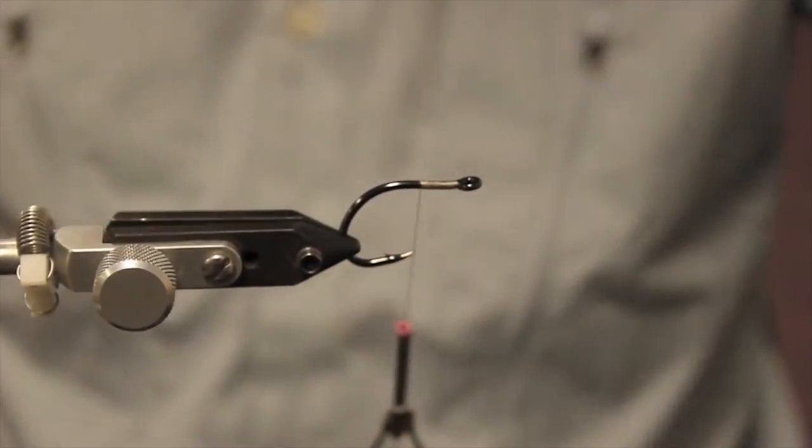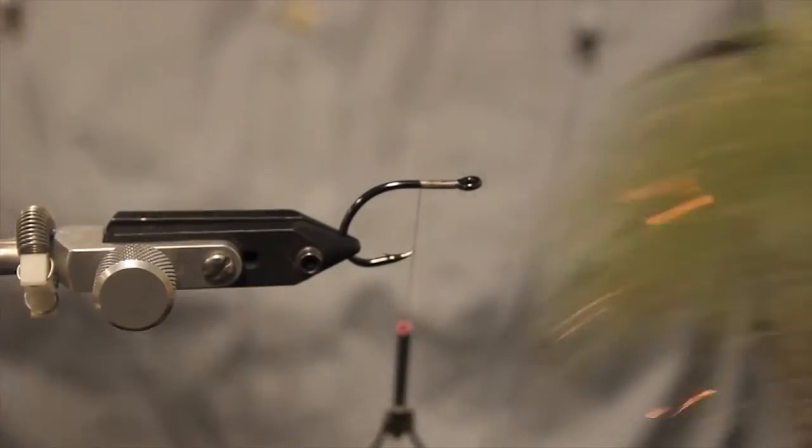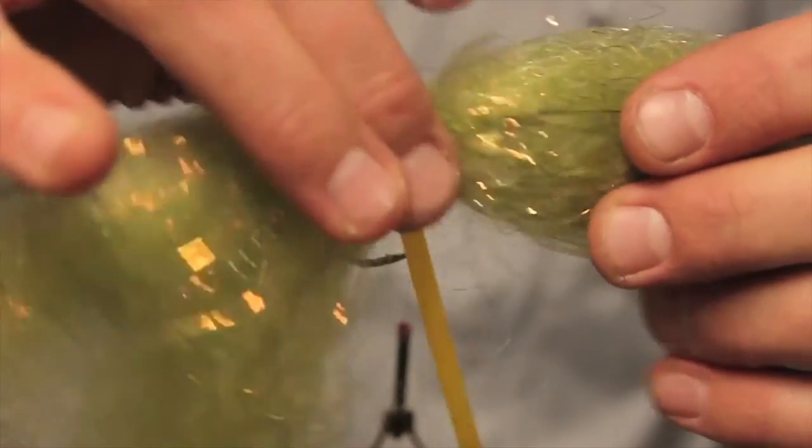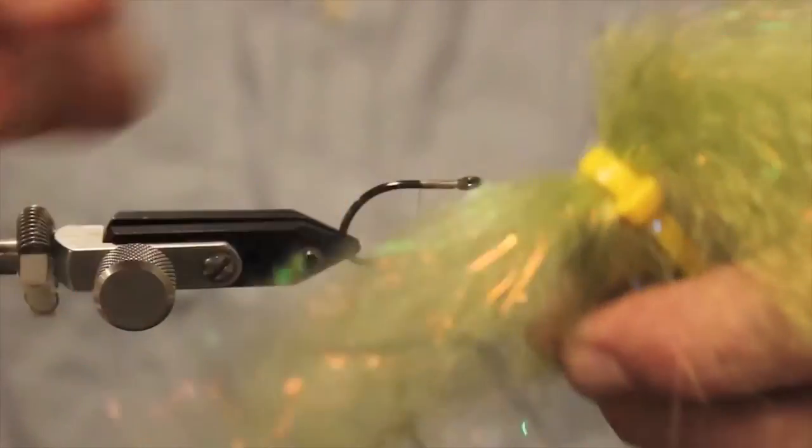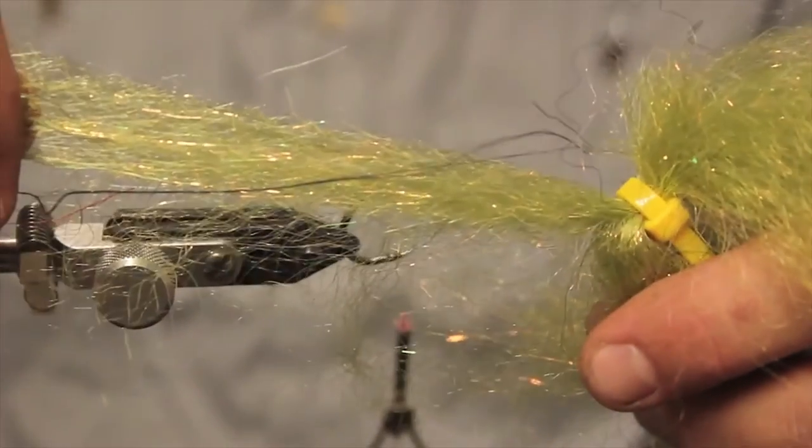Now, first thing I like to do with this Flash Blend is take and I grab a zip tie and I run a zip tie right through the middle of it. And that way, you just have better control of the material and it doesn't spread all over the place. And you can pretty much work with it. You can pick off however much you want like that.